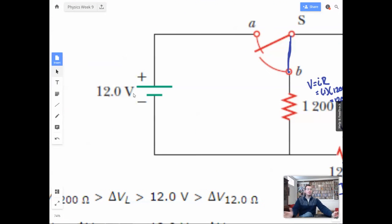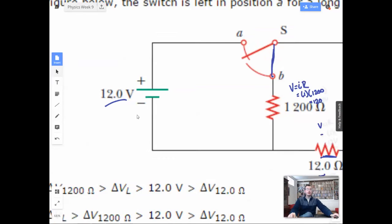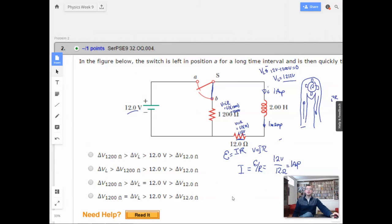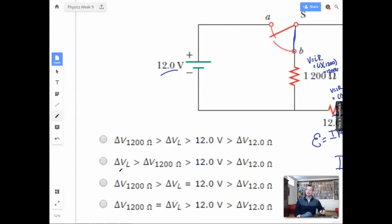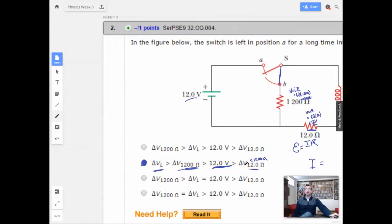And then the battery, they already tell you right here, 12 volts. So what we want to start with is the voltage across the inductor. We only have one where the voltage across the inductor is the biggest. So then we're going to have this guy because the inductor has to compensate for both the 1200 and the 12. So I already know it's going to be this one. Then the next will be the 1200. The next will be the 12 volt battery which is exactly 12 volts. And then we'll have the 12 ohm resistor which will be slightly less than 12 volts.